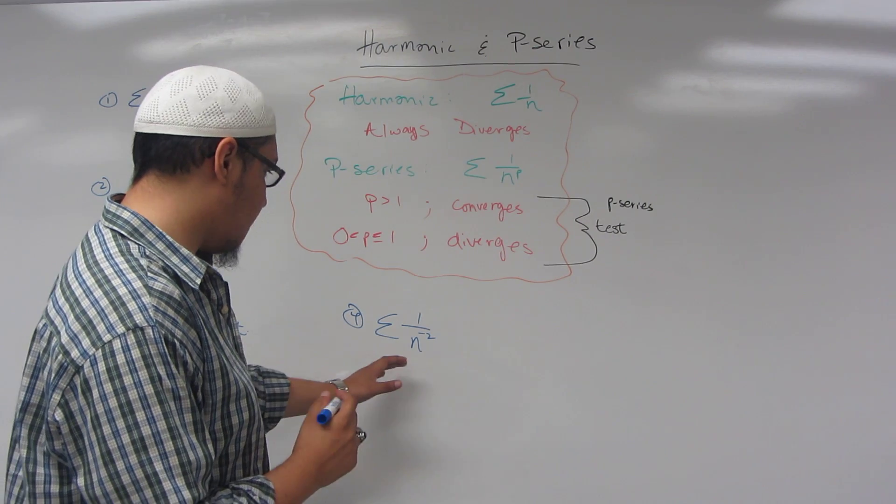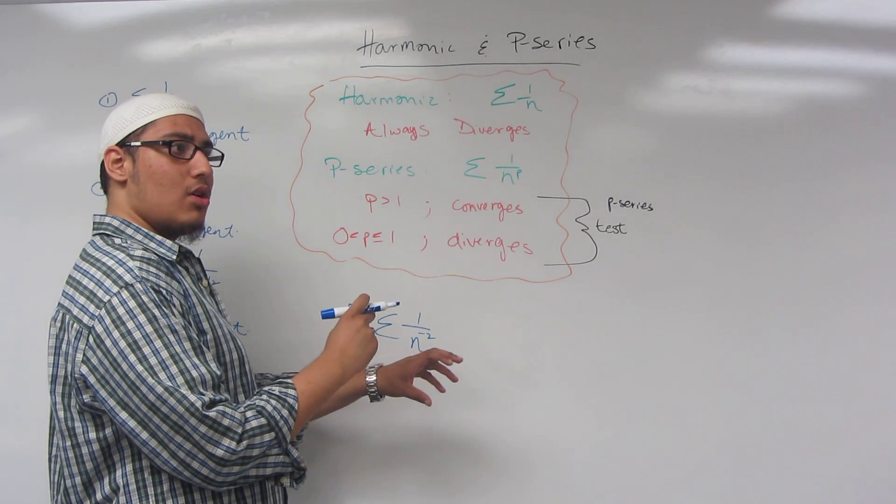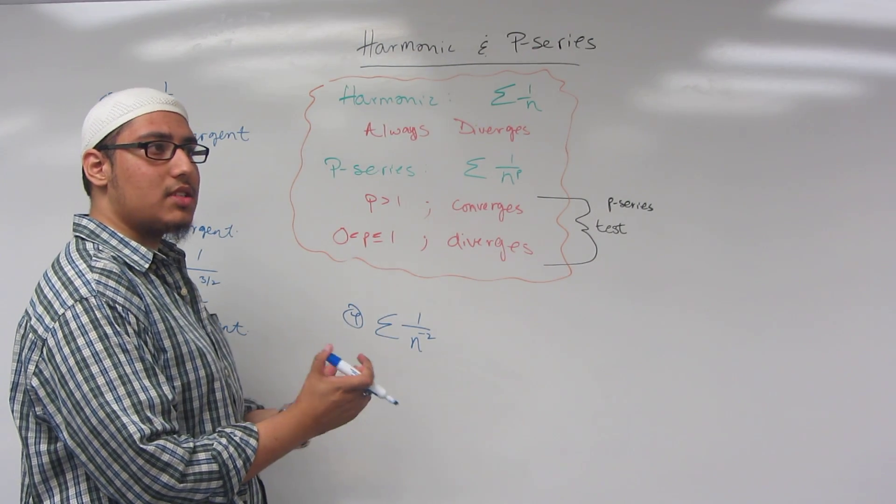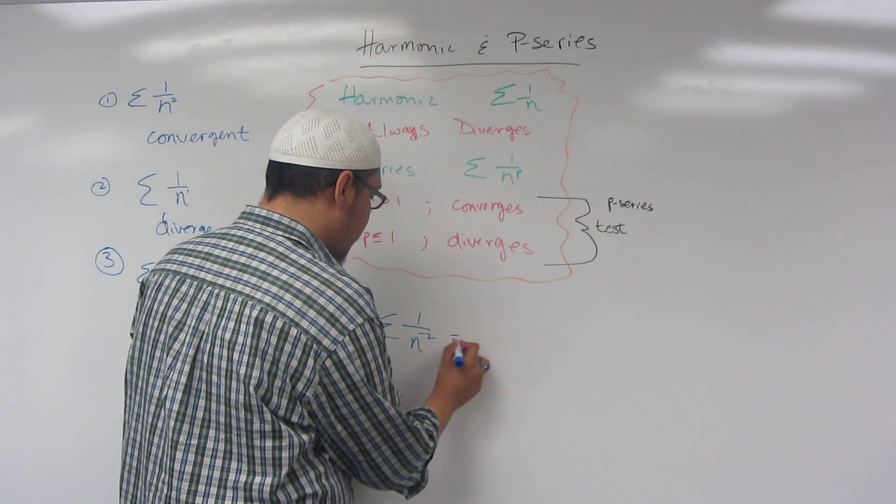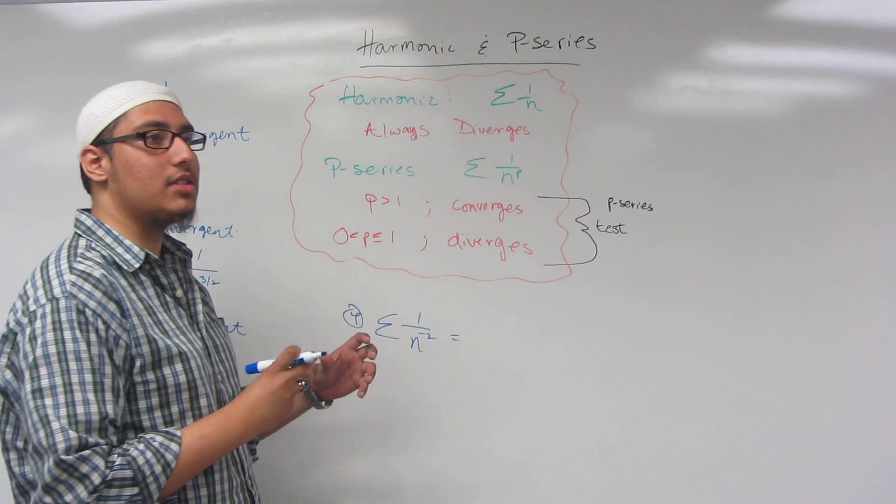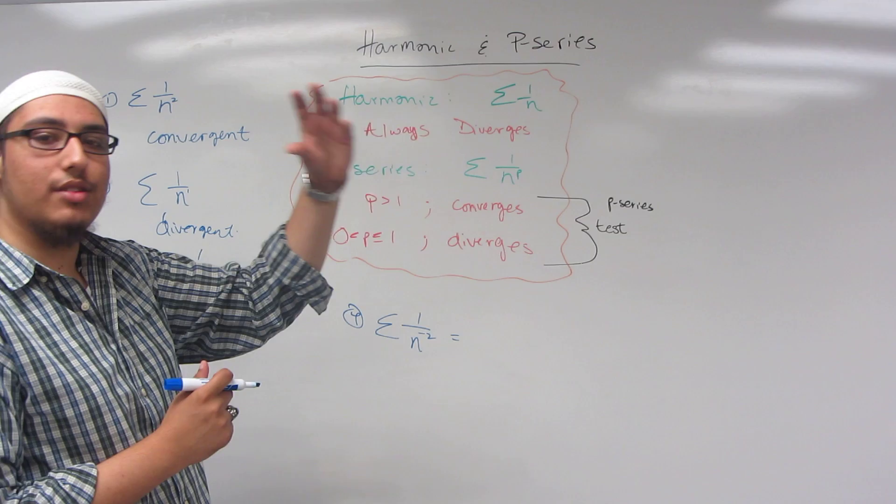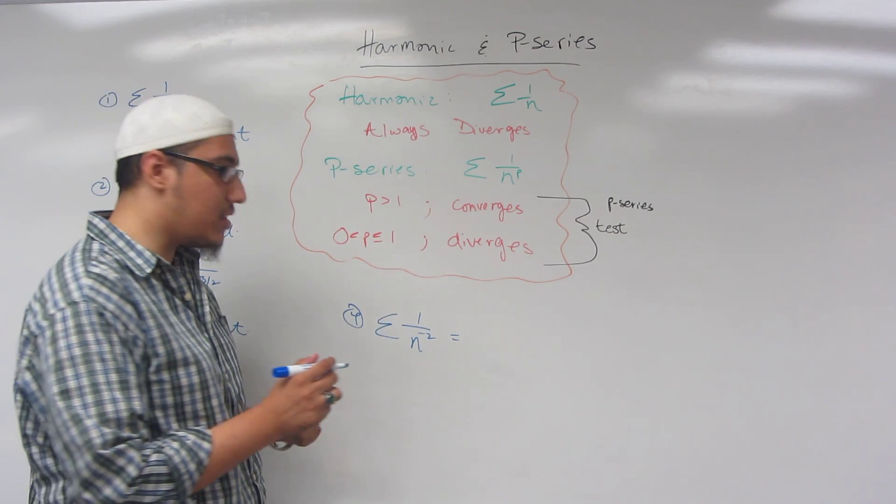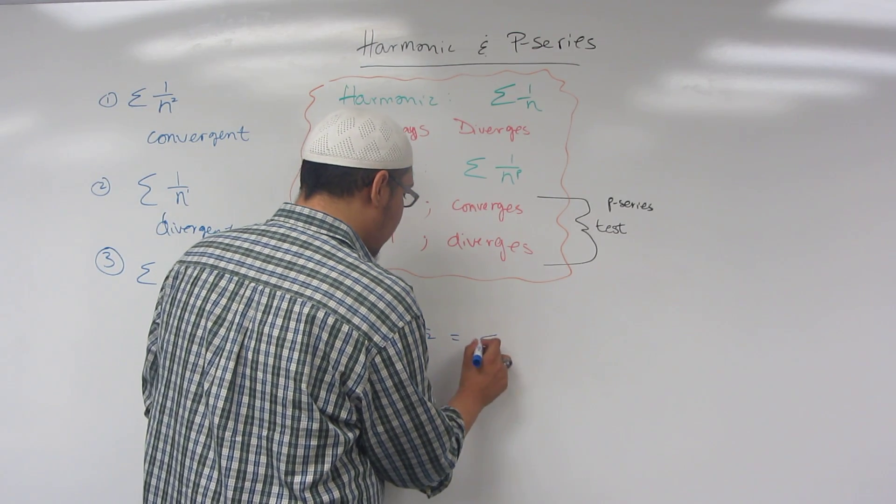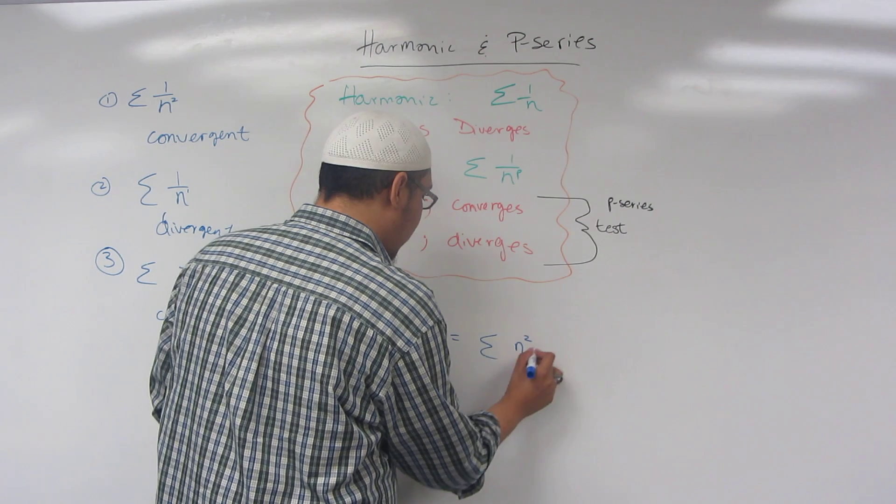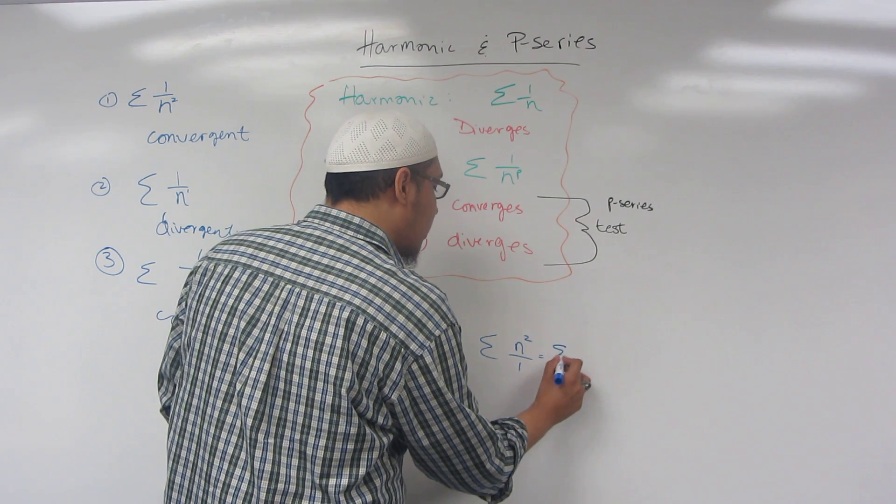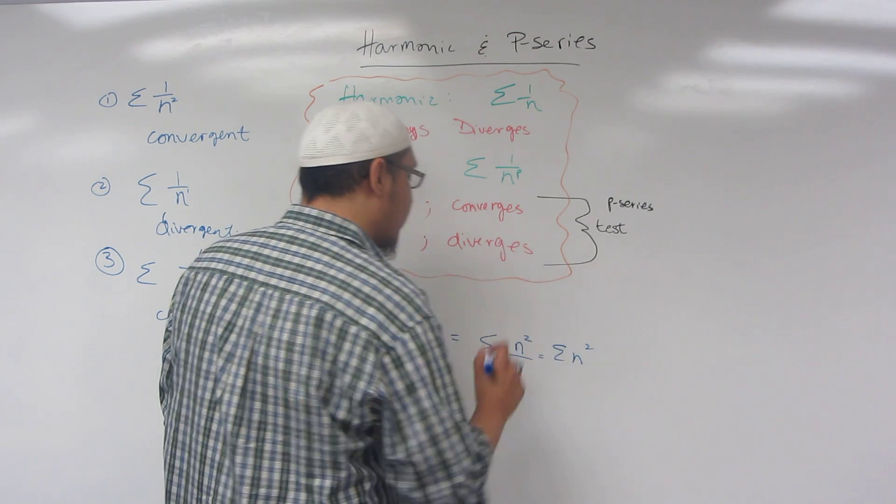This can be, using rules of exponents, simplified into, if we have a negative exponent on the denominator, you can simply move it to the top and get rid of the negative sign. This will end up being n squared over 1 or simply sigma n squared.